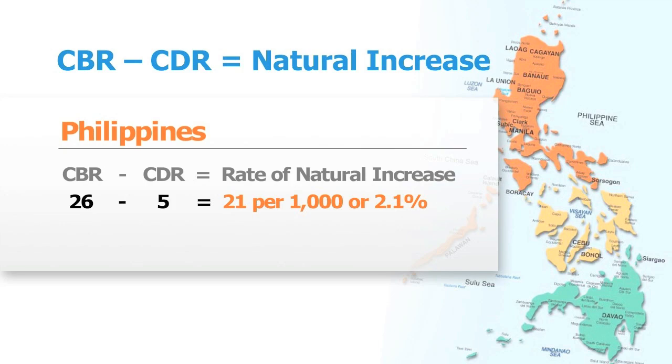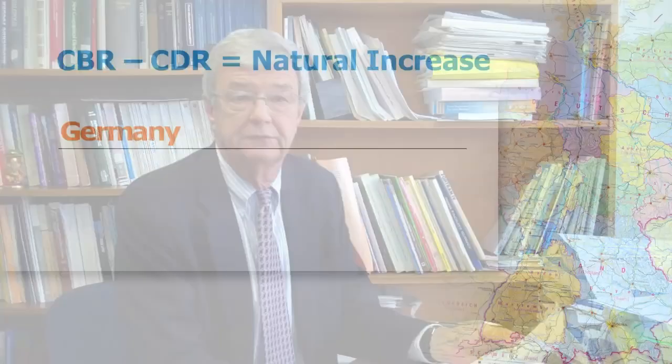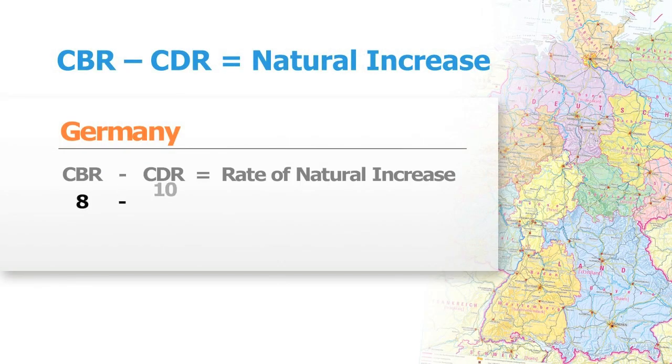That's 2.1%, which is how we usually express it as a percentage. In Germany, the crude birth rate is about 8 and the crude death rate is 10 — so the crude death rate is higher than the crude birth rate, giving us what is called natural decrease. There are more deaths every year in Germany than there are births, so population growth will decline unless there is immigration. In the Philippines, an annual rate of natural increase of 2.1% will double the population in 33 years. In Germany, a minus 0.2% natural decrease will cause that country to halve in population size in about 347 years.